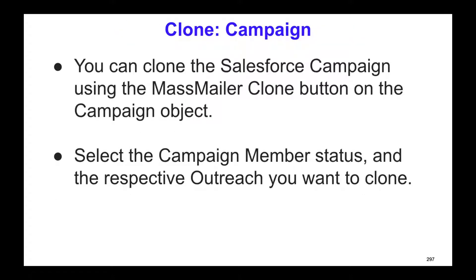To clone a campaign — if you are sending emails using the Salesforce campaign object — you would find a MassMailer clone button on the campaign object. Click on that, and it will show any outreaches you've used before that are related to the campaign. Select the respective outreach and the campaign member status values to clone the campaign. That's how the clone works in a campaign.